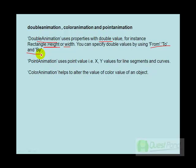If you have a line segment and you want to specify the X and Y values, you can use point animation. If you want to modify the color of an object using a hexadecimal value, you can use color animation. Depending on the animation needs, you can use double animation, point animation, or color animation. In the coming video, we will take up double animation and try to animate a rectangle object.